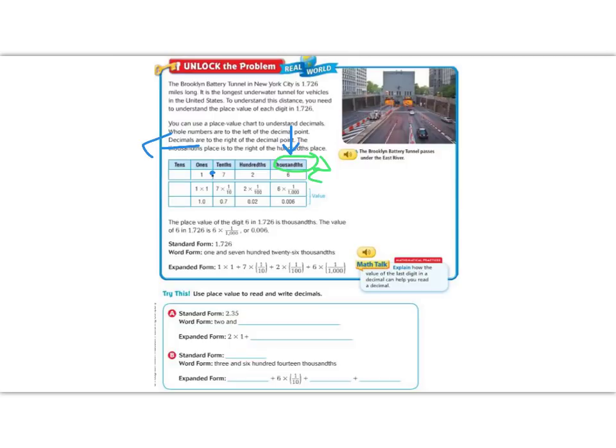We can also look at this in expanded form with how much each place value is worth. The one is in the ones place, so it would be worth one times one. The seven is in the tenths place, so it is worth seven times one tenth. The two is in the hundredths place, it is worth two times one hundredth. And the six is in the thousandths place, it is worth six times one thousandths.